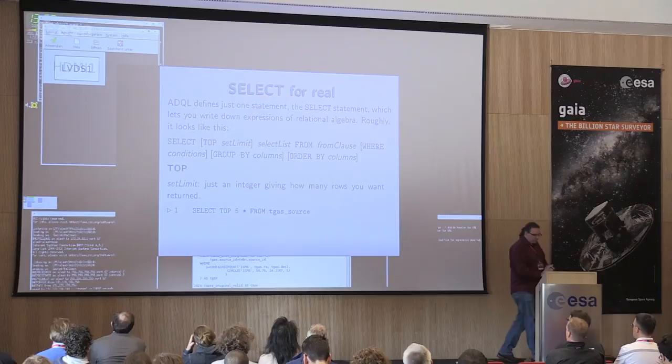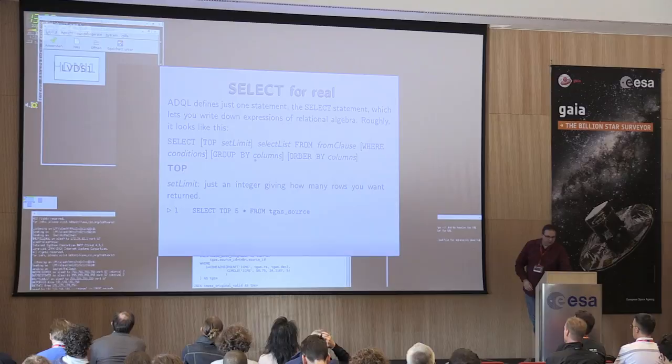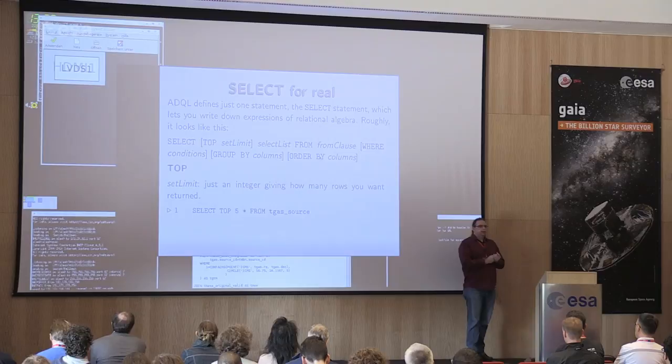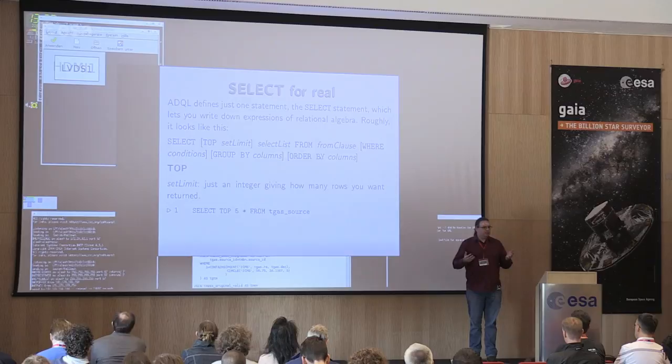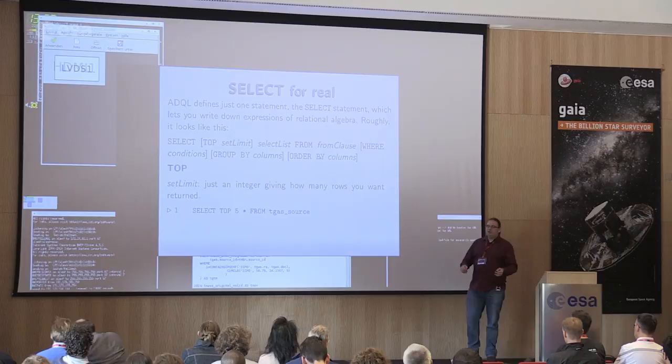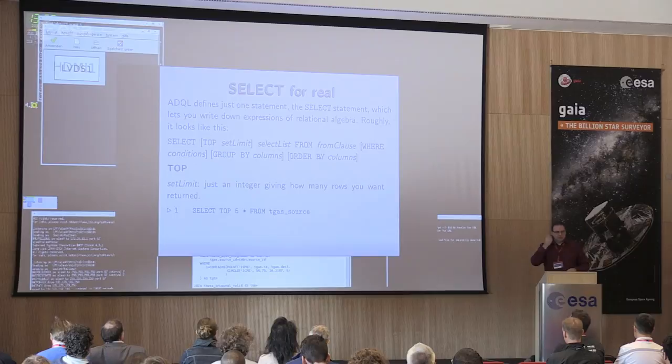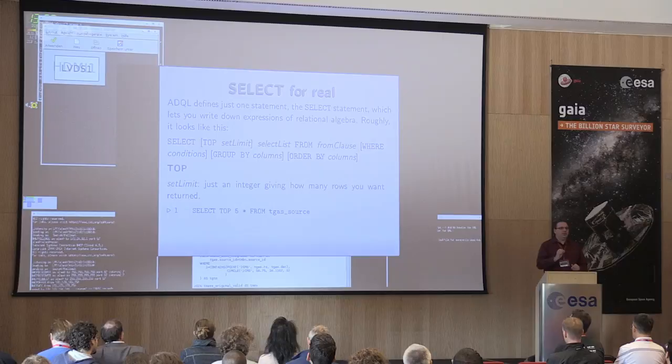You can immediately boost all your queries if you leave ORDER BY out, or apply it only when you really need it. A simple example query would be: SELECT TOP 5 from the Gaia source catalog. That's a complete valid SQL query — selecting just the first five results. Now let me show this in TOPCAT.